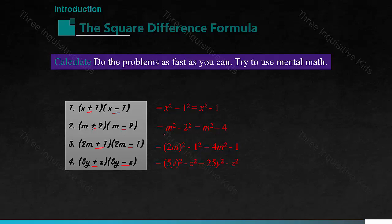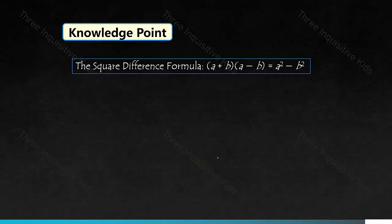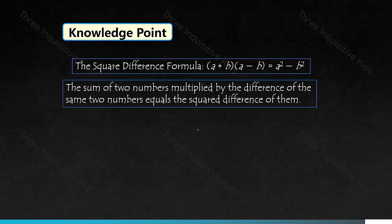You can see that in each case we had the first term squared minus the second term squared. For the first problem: x squared minus 1 squared. For the second: the first term squared minus the second term squared. Same pattern for the third and fourth. So the square difference formula, which is what we're learning today, is: a plus b times a minus b equals a squared minus b squared. The sum of two numbers multiplied by the difference of the same two numbers equals the squared difference of them.